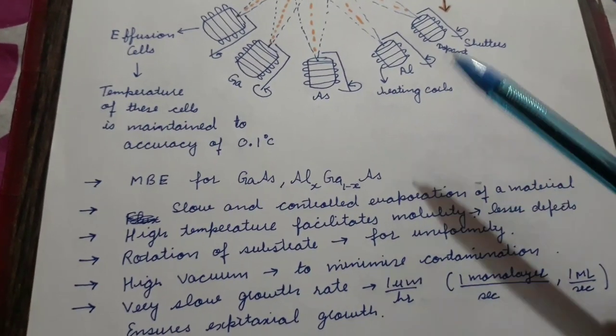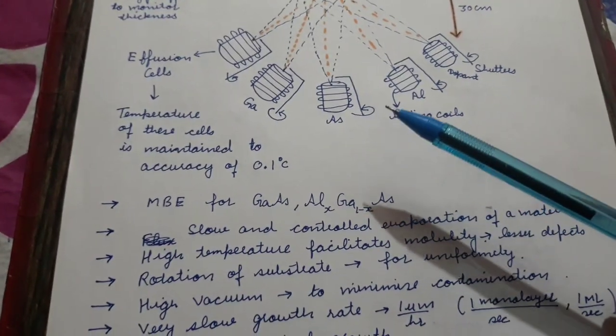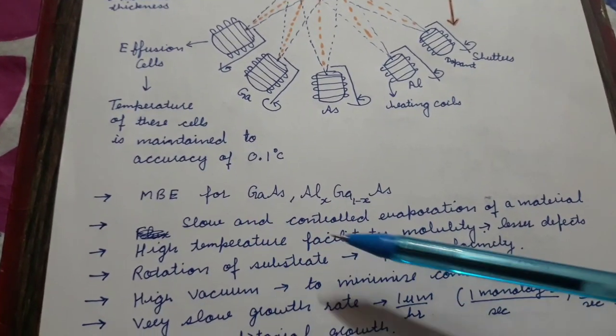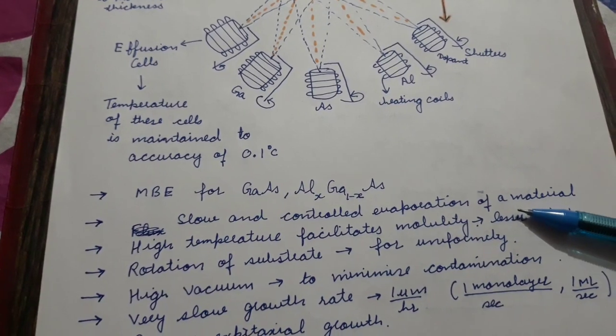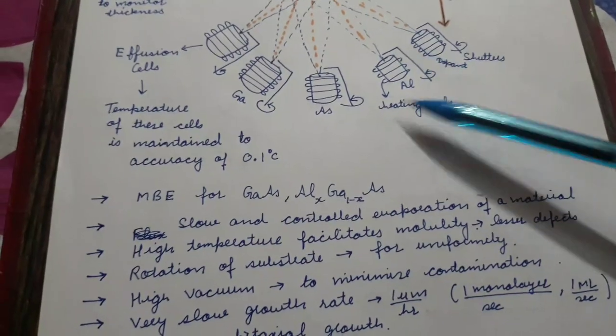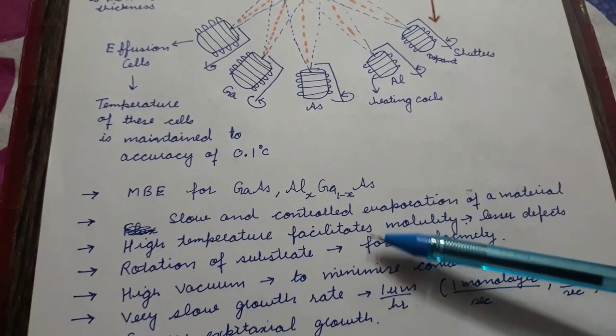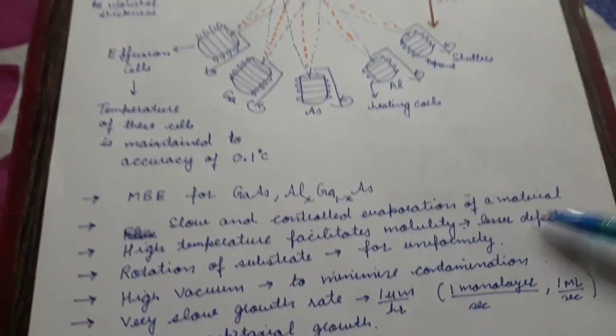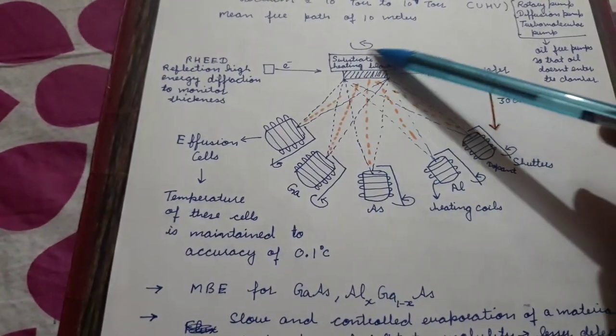MBE is very famous because of its controlled evaporation of material. It is a slow process. High temperature facilitates mobility and lesser defects. That is why the substrate is kept at high temperature.